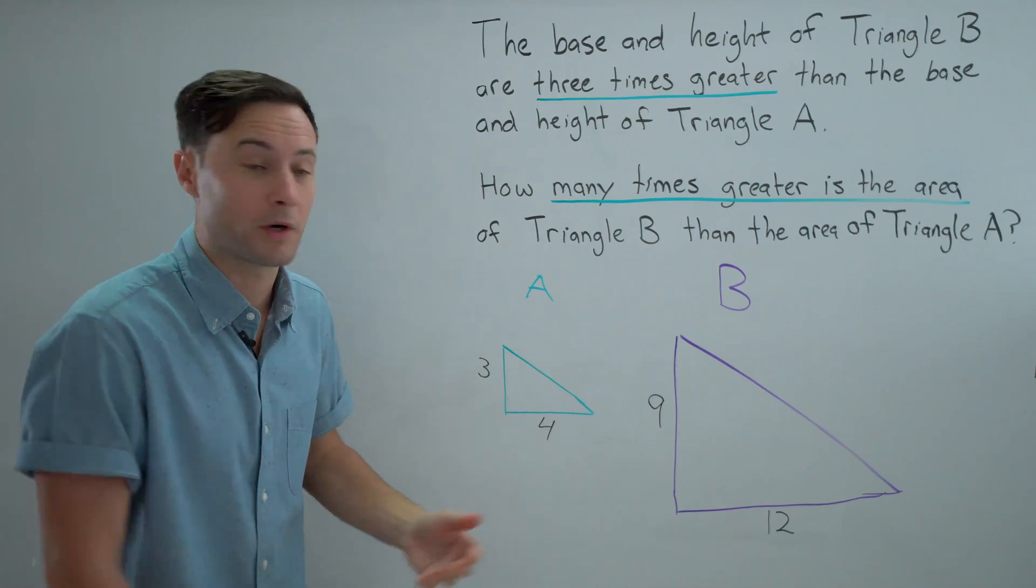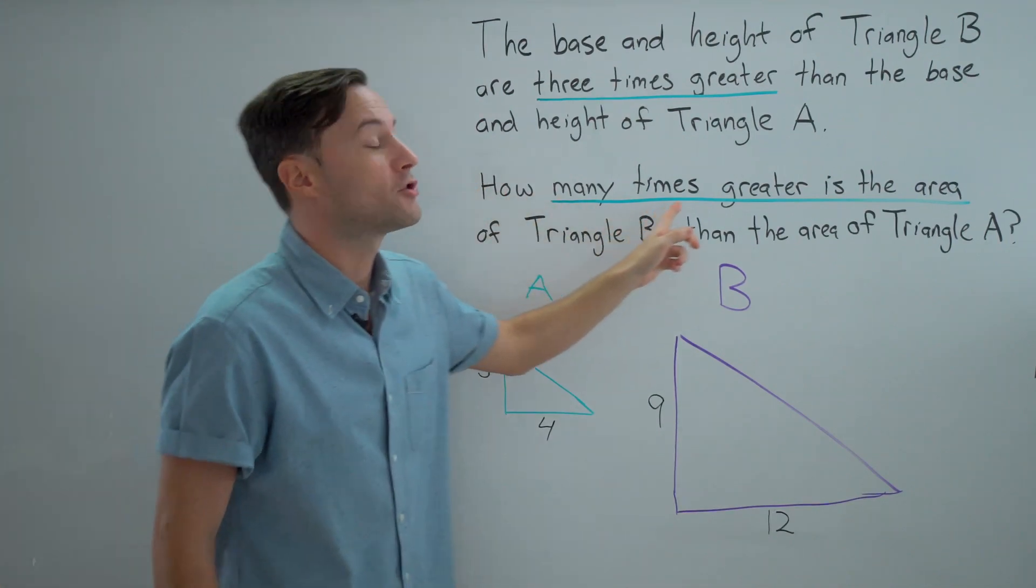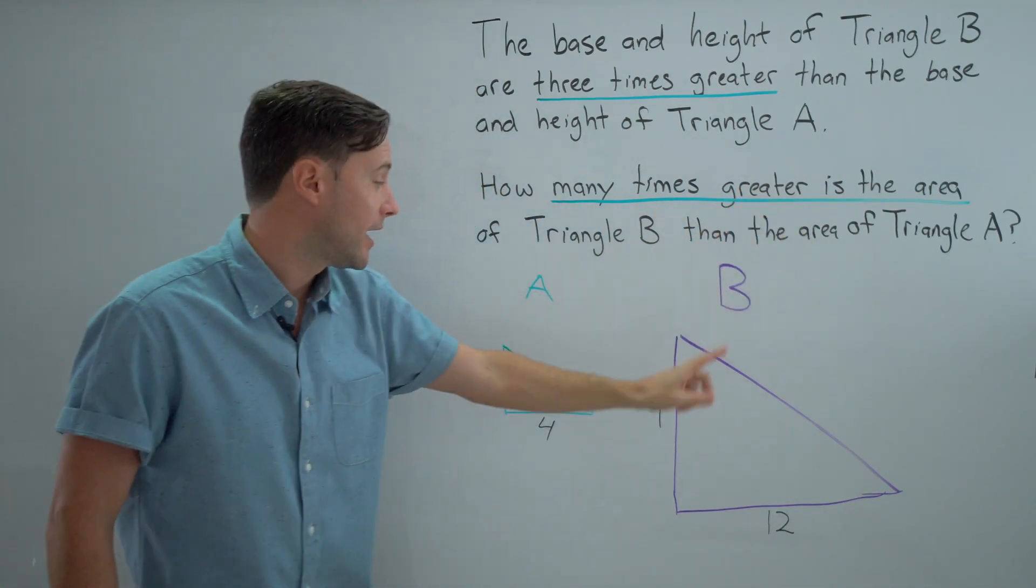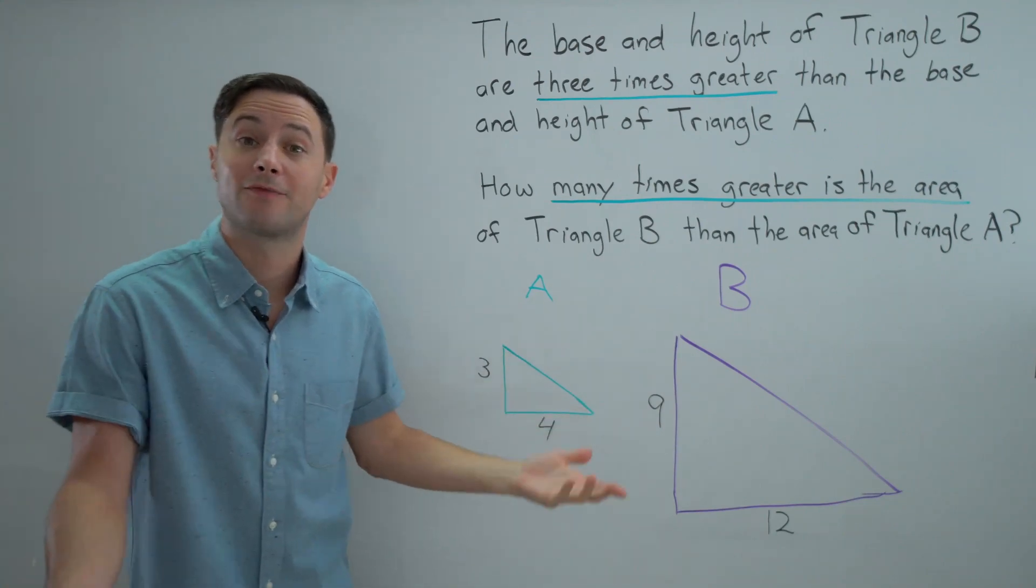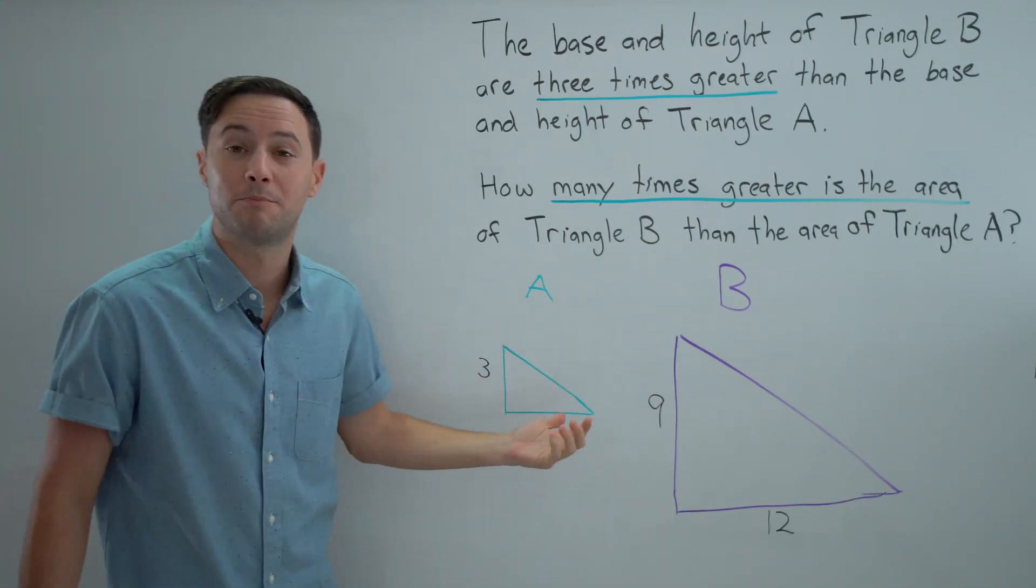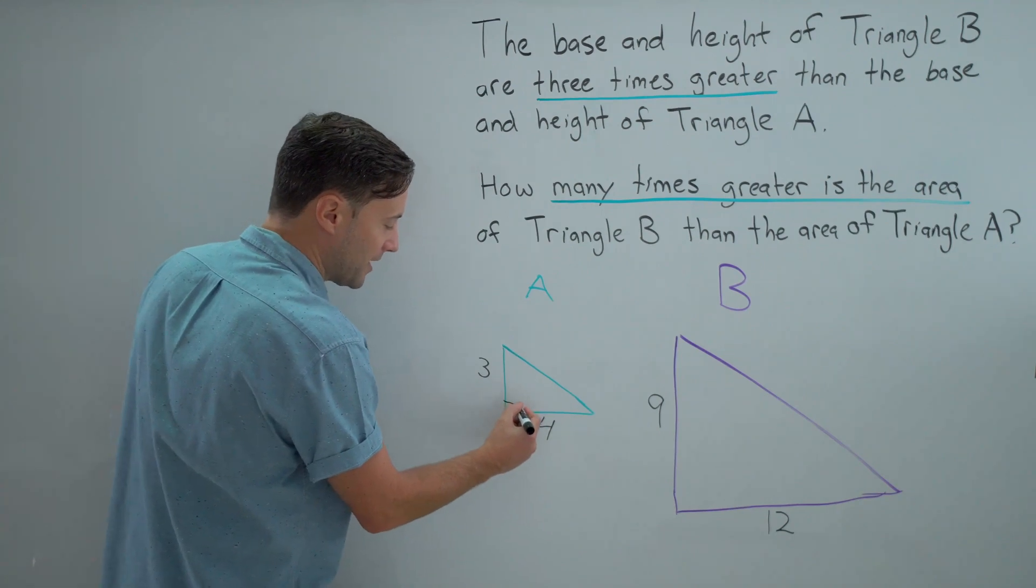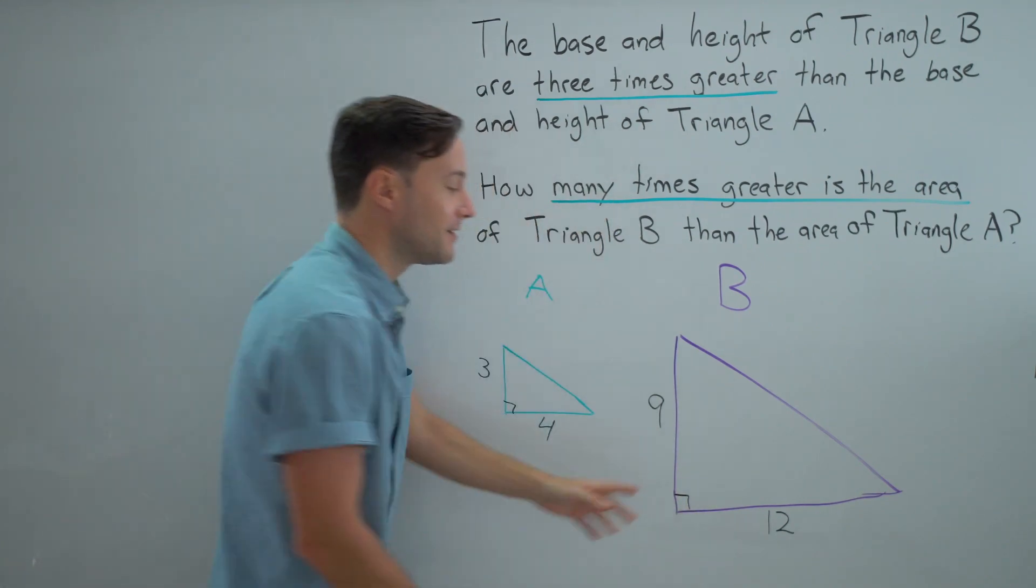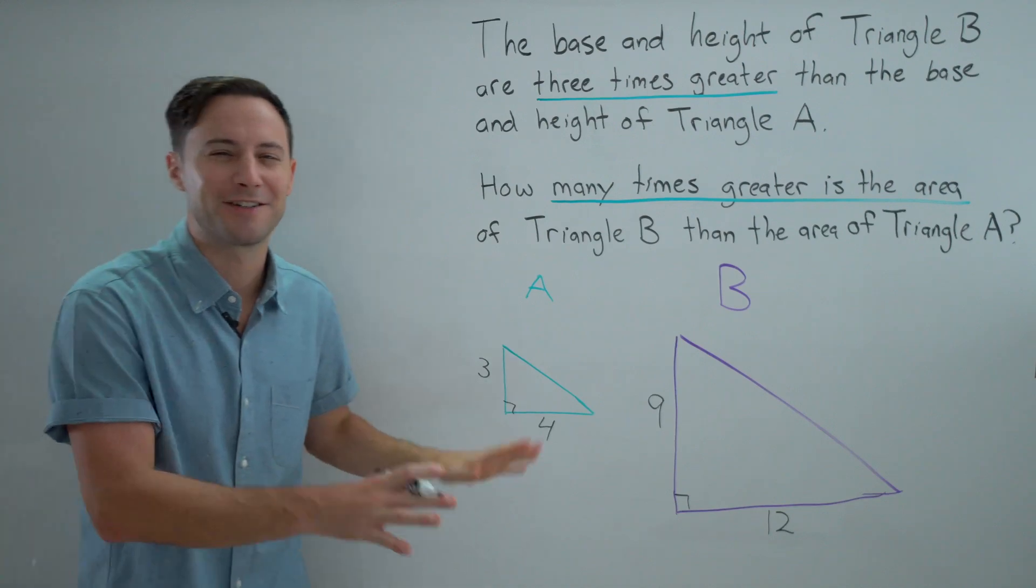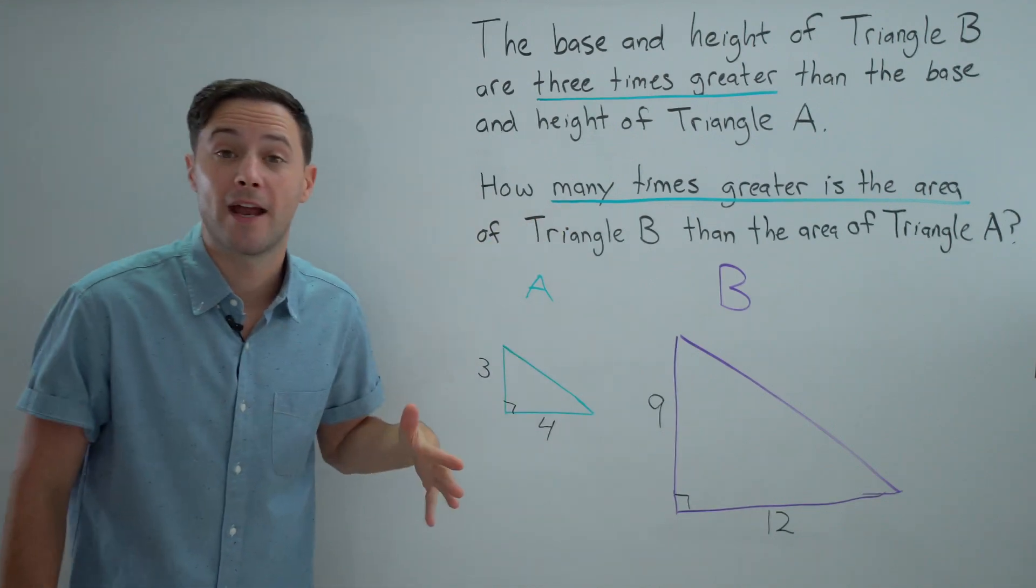So now we've got some numbers to work with. The question says, how many times greater is the area of triangle B than the area of triangle A? So let's find the area of both. All we needed was base and height. By the way, I just made some right triangles here. If you were wondering, they are perpendicular. That's why I chose right triangles. Make it simple. But let's find the areas.